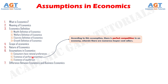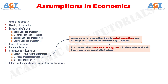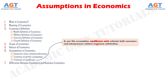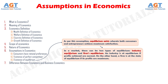Second, existence of perfect competition. According to this assumption, there is perfect competition in an economy wherein there are numerous buyers and sellers. It is assumed that homogenous products exist in the market and both buyers and sellers cannot affect prices. Thirdly, existence of equilibrium. As per this assumption, equilibrium exists wherein both consumers and entrepreneurs achieve maximum satisfaction. In a market, there can be two types of equilibrium: industry equilibrium and firm's equilibrium.